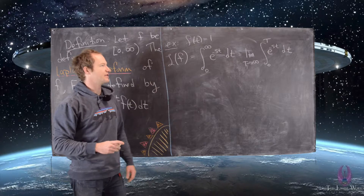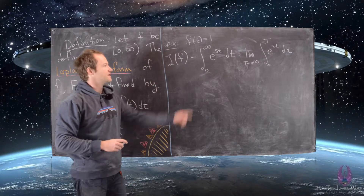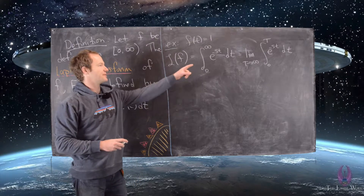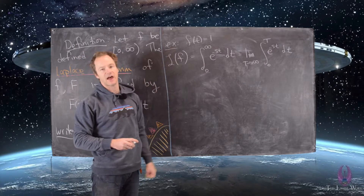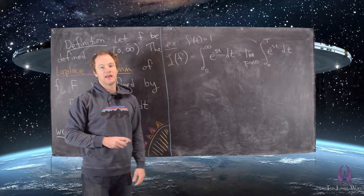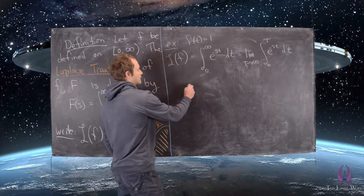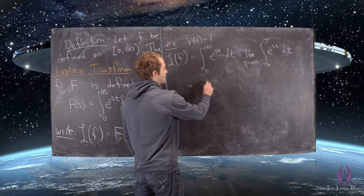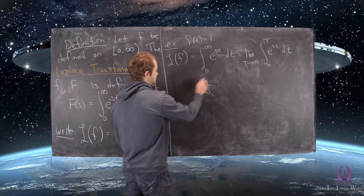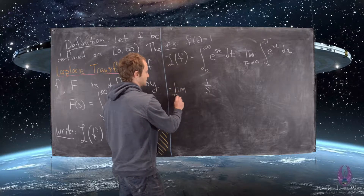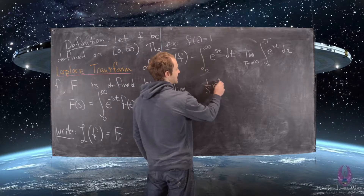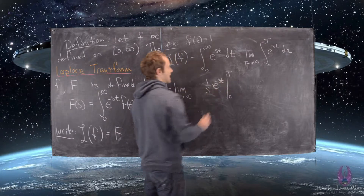Now we take the antiderivative. You can use a u-substitution if you want, but remember that if you take the derivative of e to the minus st, a negative s comes down as a multiplier because of the chain rule. So the antiderivative is negative one over s times e to the minus st. We have the limit as capital T goes to infinity of negative one over s times e to the minus st, evaluated from zero to capital T.